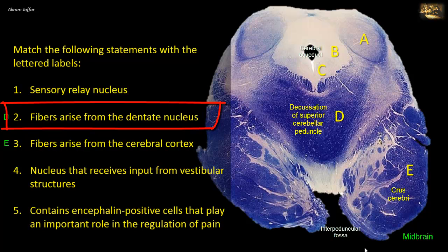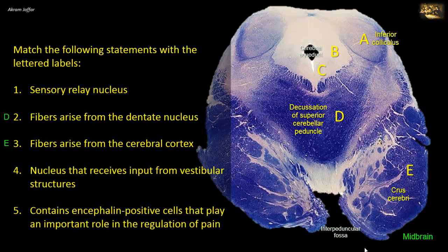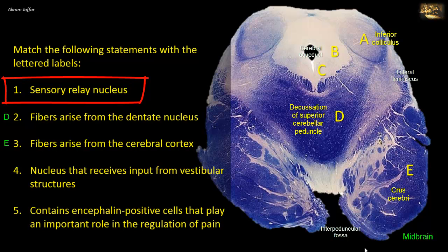Since the superior cerebellar peduncle decussates in the lower midbrain, then in this region of the tectum, it is the level of the inferior colliculus A. This is a sensory relay nucleus in the auditory pathway. Fibers of the nearby lateral lemniscus synapse here, and the axons of neurons in the inferior colliculus pass through the inferior brachium to reach the medial geniculate body of the thalamus. So A, the nucleus of the inferior colliculus, matches with one: sensory relay nucleus.